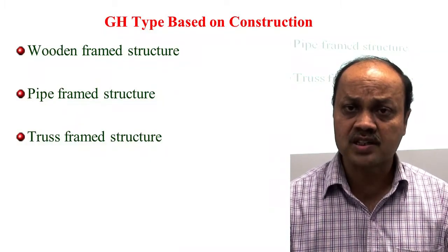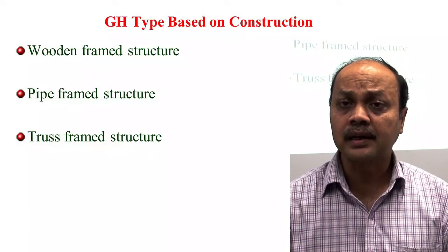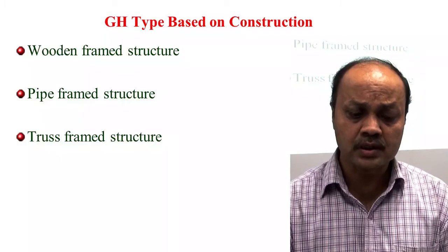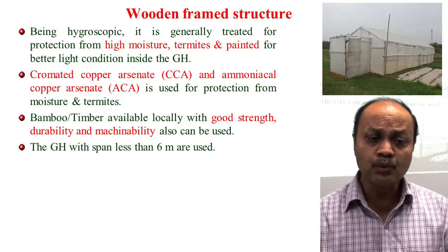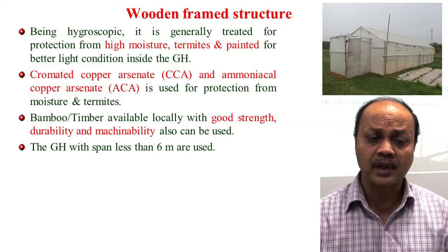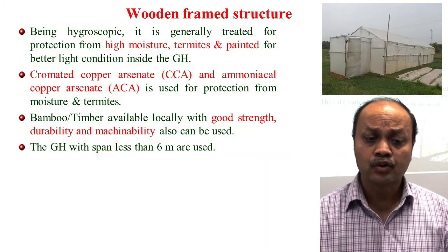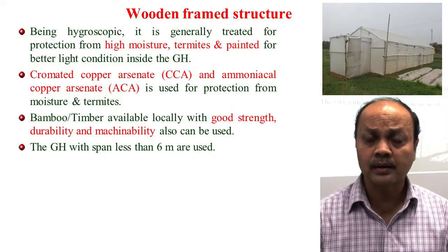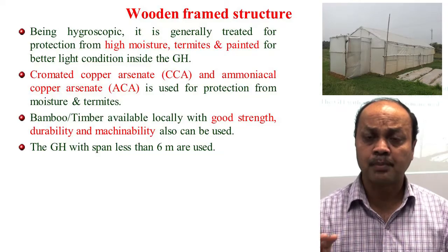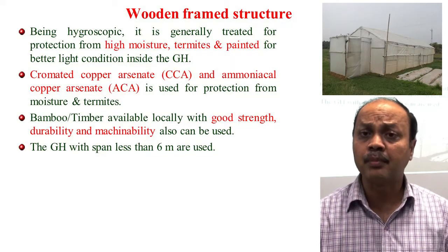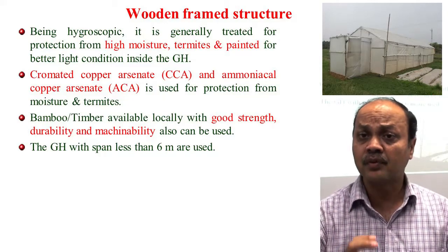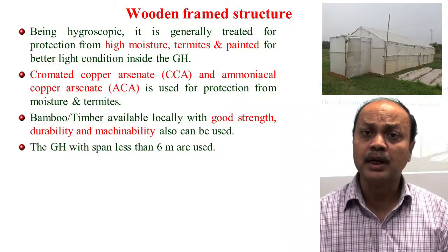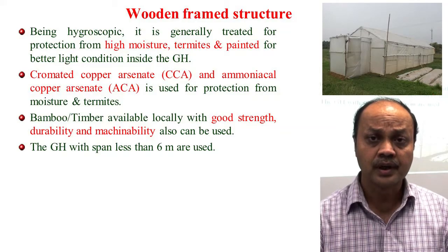Based on construction materials, greenhouses can use wooden frame, pipe frame, or truss frame structures. In a wooden frame, the structure must be protected from high moisture and termites using chromated copper arsenate (CCA) or coal tar. Waste plastic is also used to protect the parts going into the soil. In Jharkhand and the northeast, different types of bamboo are used, and selection of bamboo is important as strength, durability, and machinability vary by type.